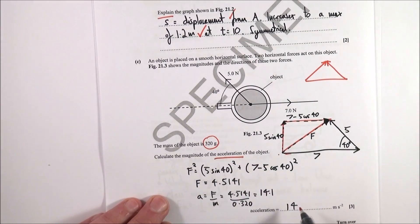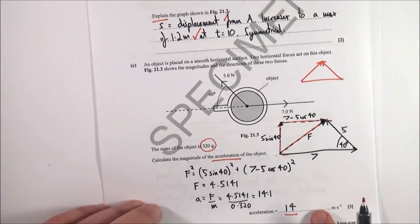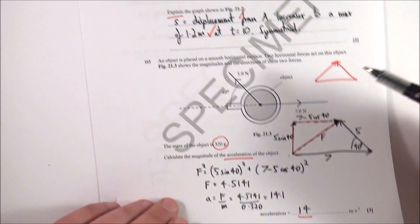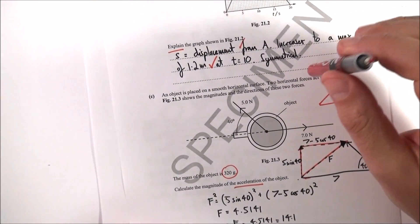Again I've given my final answer to two significant figures, so 14 meters per second squared. But I thought that this one here was a particularly tricky question. And that's it, so the next video I've got is all about question 22.